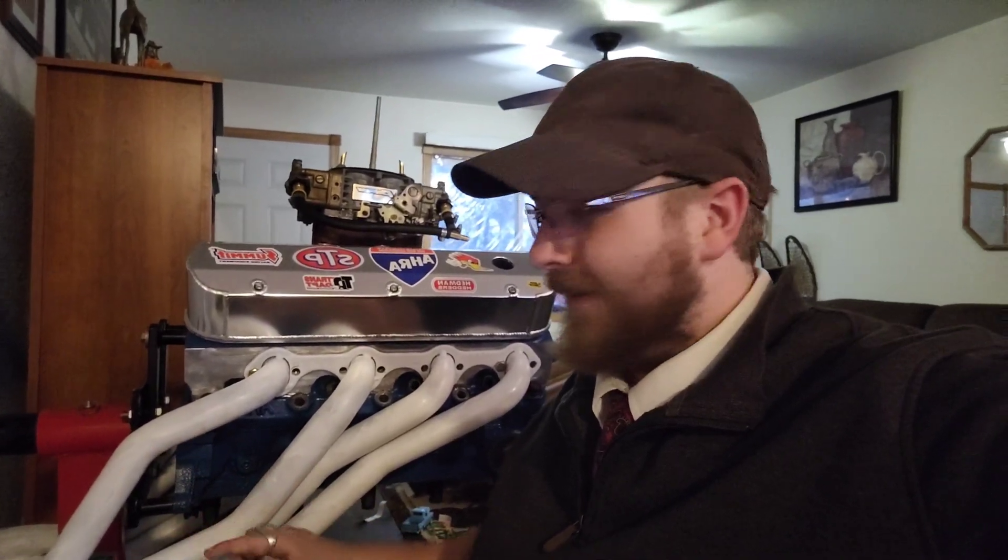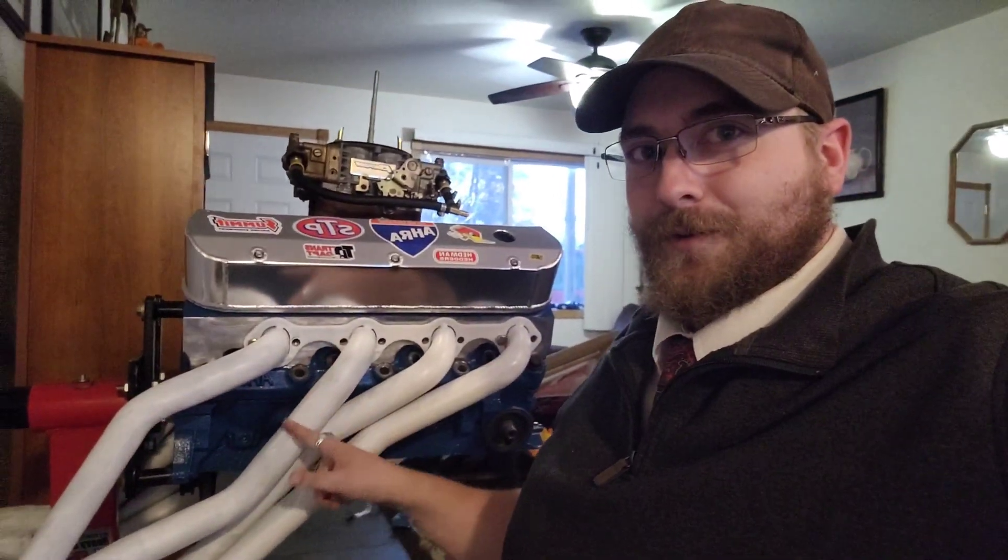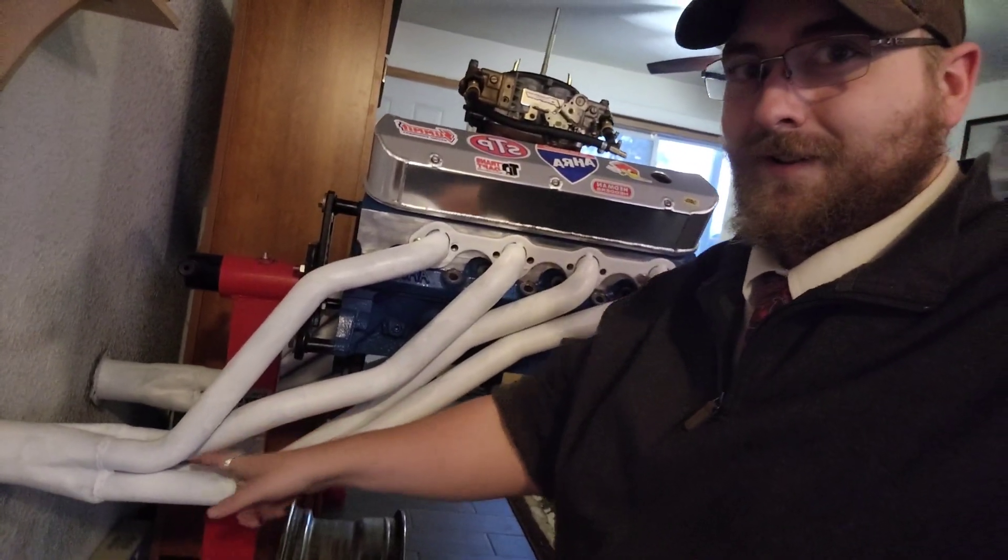You'd want 7 to be a slightly longer tube. That way when 5 goes, it has a bit of a head start towards the collector so when it gets down here, it can help pull 7 out.